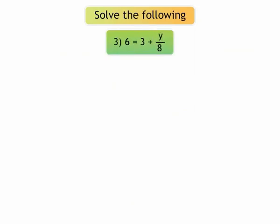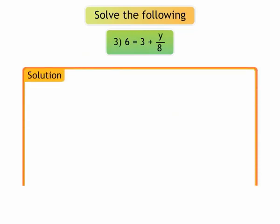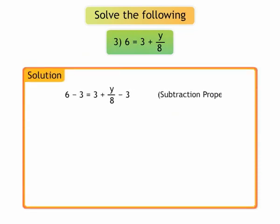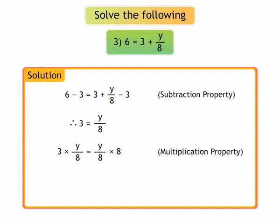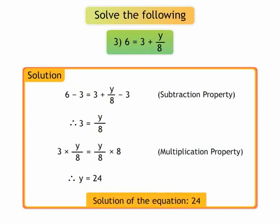3. 6 is equal to 3 plus y upon 8. We will use subtraction property to eliminate 3 first. We get 6 minus 3 is equal to 3 plus y upon 8 minus 3. On simplifying, we get 3 is equal to y upon 8. Now, use multiplication property to eliminate 8. We get 3 into 8 is equal to y upon 8 into 8. We get y is equal to 24. The solution of the equation is 24.